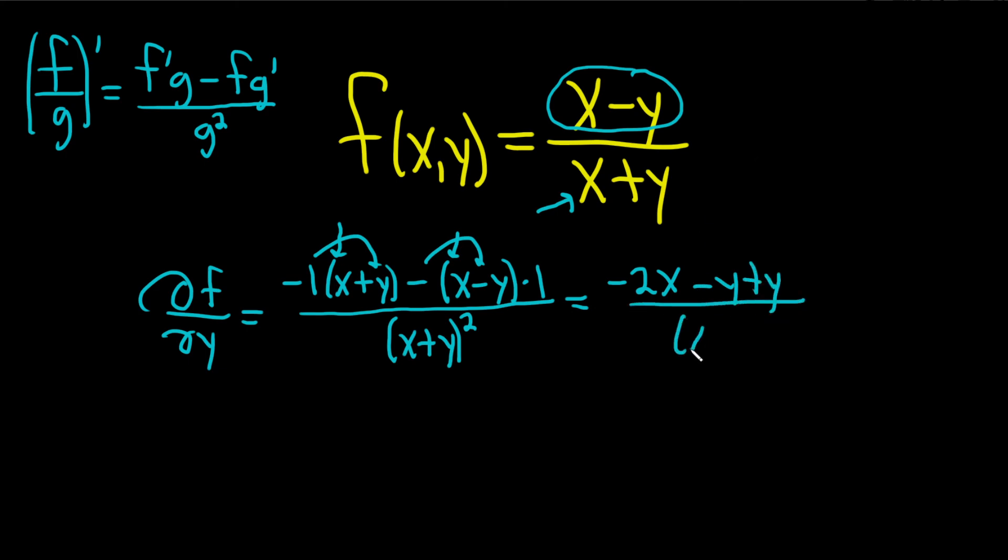Then on the bottom we have x plus y squared. So this is equal to negative 2x over x plus y squared, and that would be the partial derivative of f with respect to y.